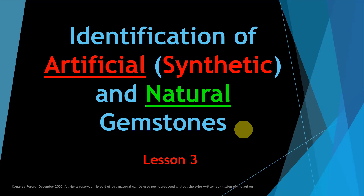Identification of artificial — that means synthetic, another name is man-made. Natural means getting from the earth without any treatment. So let's look at the differences.